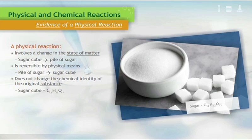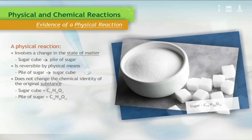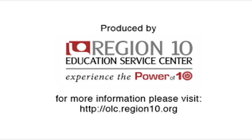The sugar in cube form has a chemical formula of C12H22O11. When the cube is altered into a pile of sugar, the chemical formula of the sugar does not change. It is still C12H22O11.